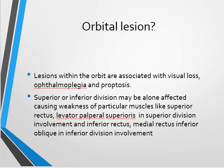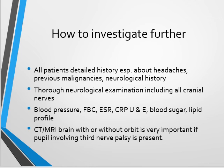Once the oculomotor nerve enters the orbit, it divides into superior and inferior divisions. There can be isolated superior division involvement causing weakness of the levator palpebrae superioris and superior rectus, both responsible for elevation. The inferior division supplies the medial rectus, inferior rectus, and inferior oblique. Any pathology within the orbit itself can cause proptosis and sometimes optic nerve involvement causing loss of vision.